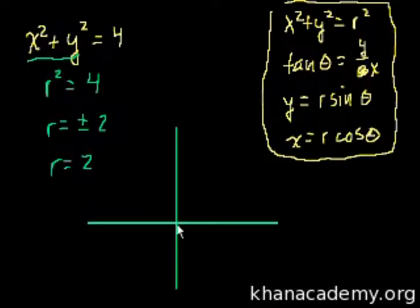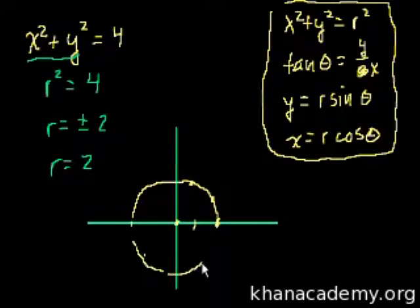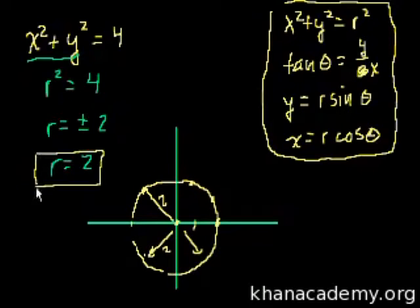Taking the square root, r is equal to plus or minus 2. In polar coordinates, r is equal to 2. That's the equation in polar coordinates with r equal to 2.